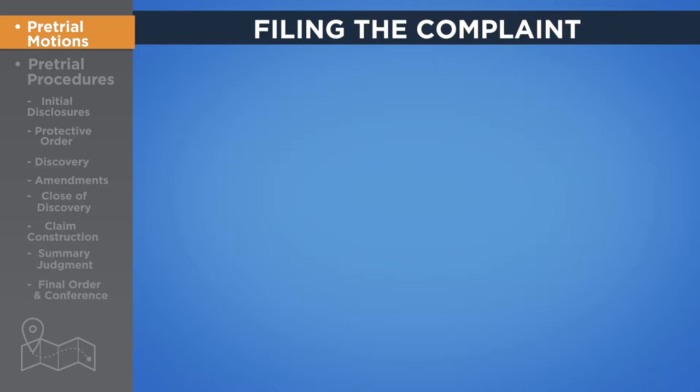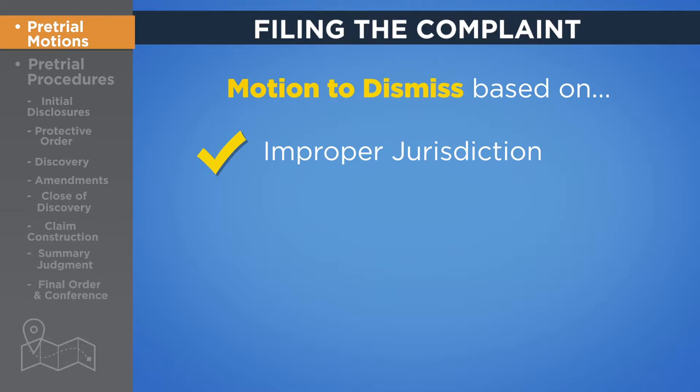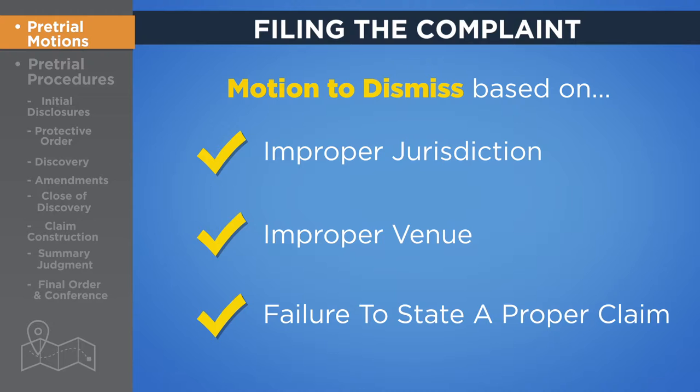Filing the complaint. Motions to dismiss may be based on improper jurisdiction, if the court does not have power over the defendant because it does not reside or do business within the geographic jurisdiction of that court; improper venue, if the defendant does not reside or did not commit any act of infringement in the jurisdiction of the court; or failure to state a proper claim, if the plaintiff has not stated a claim that the court can resolve. If a defendant chooses to file this type of motion, they must include a legal brief explaining the reasons for the motion. Several types of reply briefs may then follow, after which the court will decide whether to grant or deny the motion to dismiss.